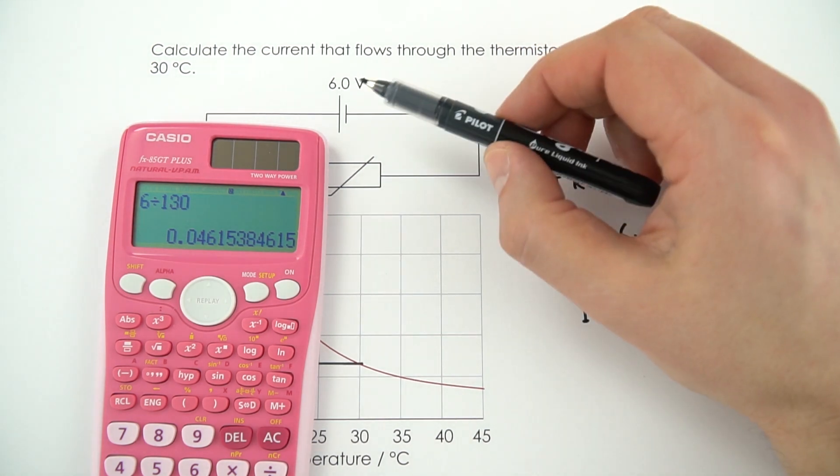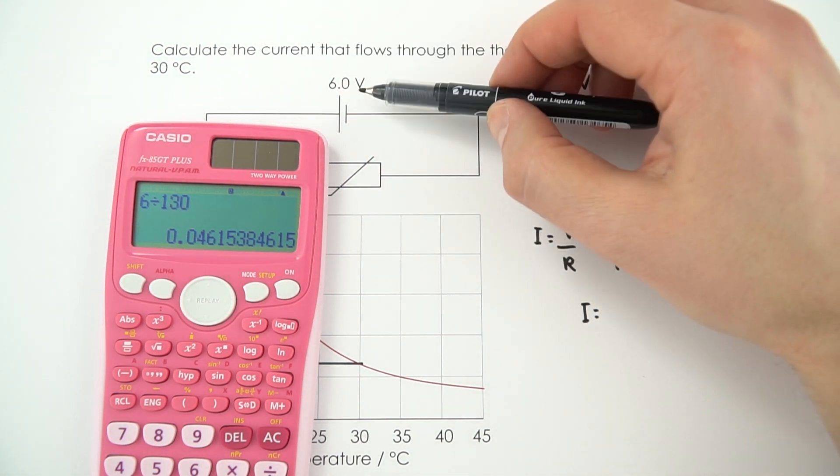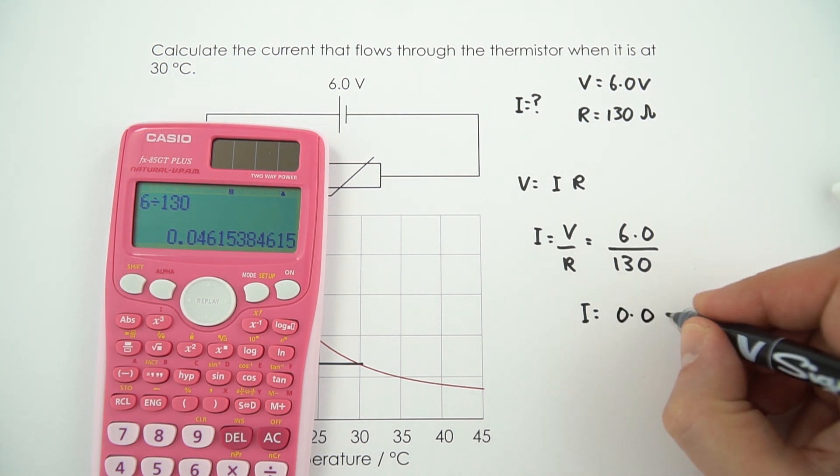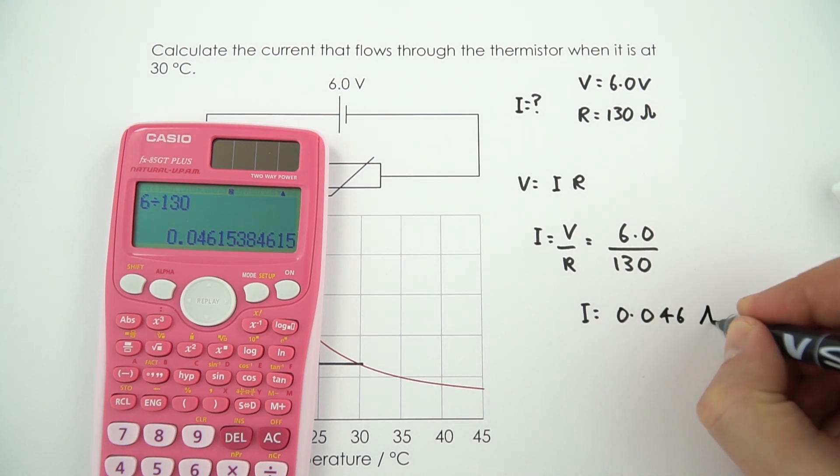I'll give my final answer to two significant figures, like my temperature and my potential difference. So the current is equal to 0.046 amps.